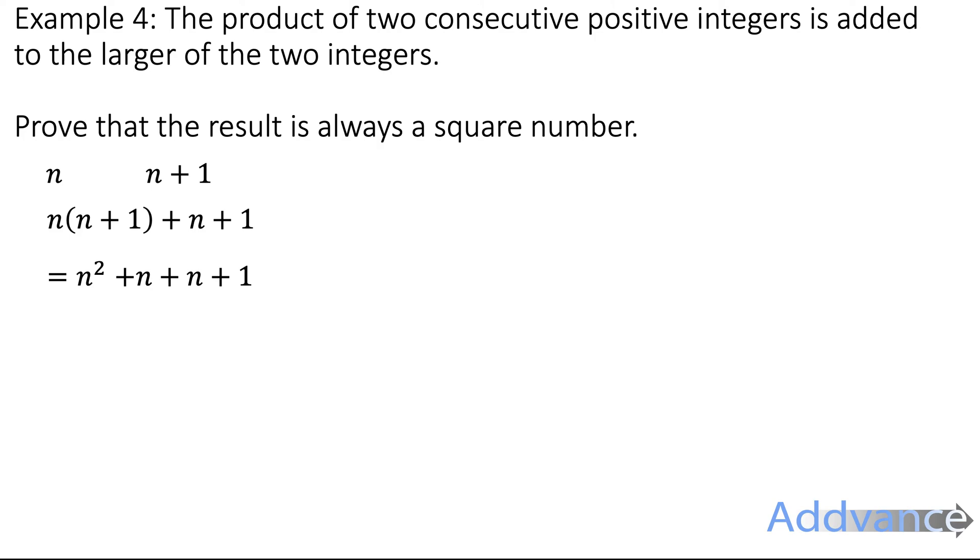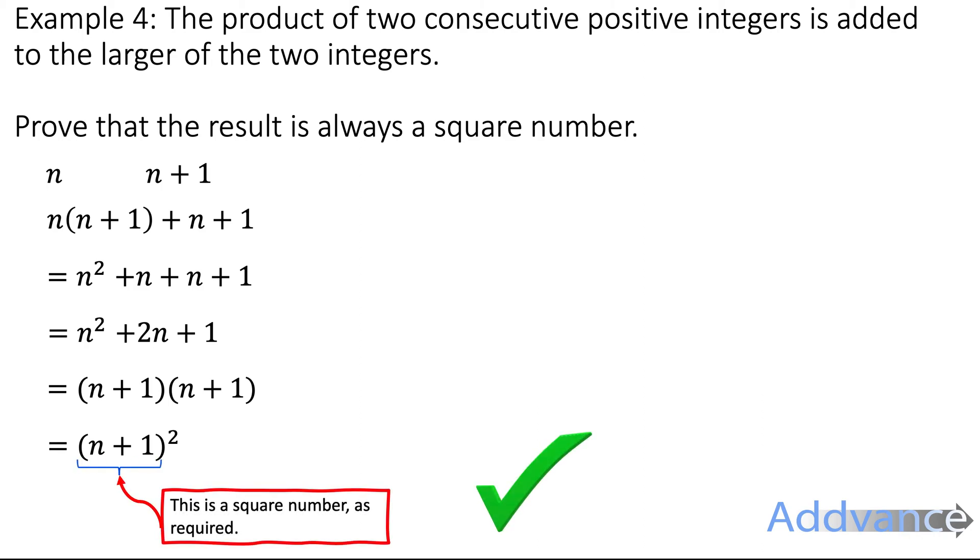We expand the brackets. We simplify. And then we factorise. We get n plus 1 times n plus 1. That's the same as n plus 1 squared. And that is a square number because it's a number squared. This is a square number as required. And we've finished.